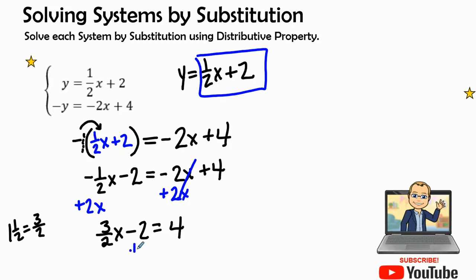Let's add 2 to both sides, therefore that gives me 0. I'm going to move it right over here so I have 3 halves x equals 6, because 4 plus 2 is 6. Now 3 halves x, I can multiply by what is called the reciprocal. The reciprocal means the opposite. I can multiply both sides by 2 thirds.